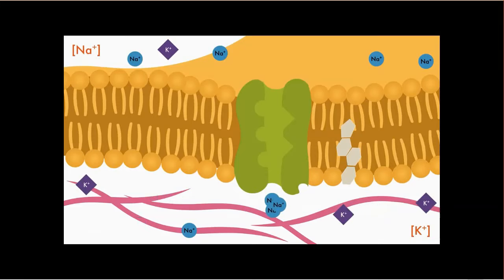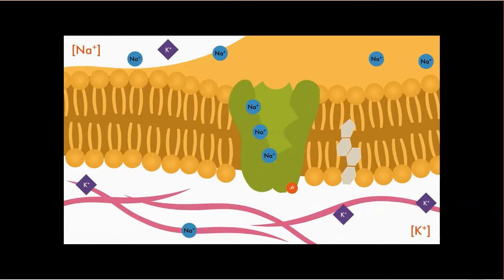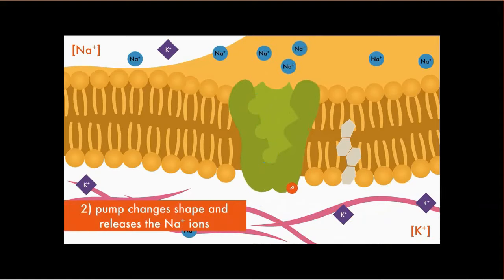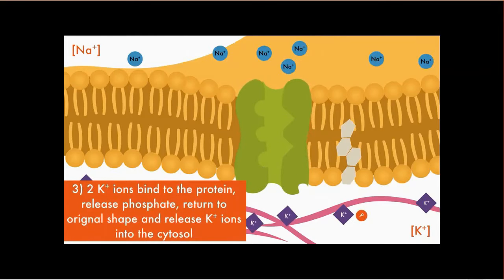Let's see how this works. First, three sodium ions from the cytosol bind to the protein. And a phosphate group from ATP breaks off in the carrier protein. This provides energy for the shape of the protein to change. And the sodium ions can be released into the outside of the cell. Now two potassium ions will enter the pump, which causes the phosphate to break off and return the pump to its original shape and release the potassium into the cytosol.